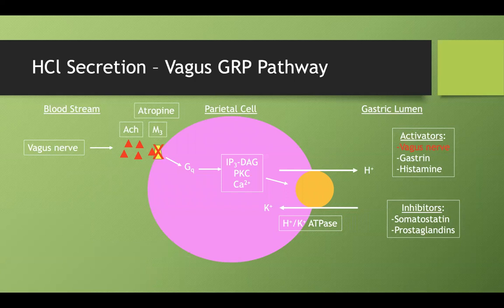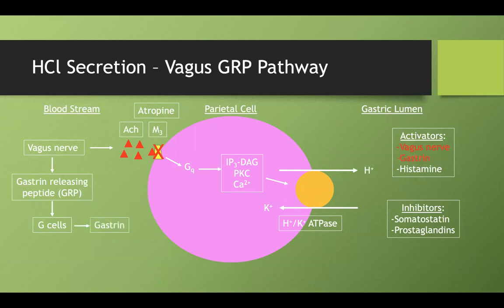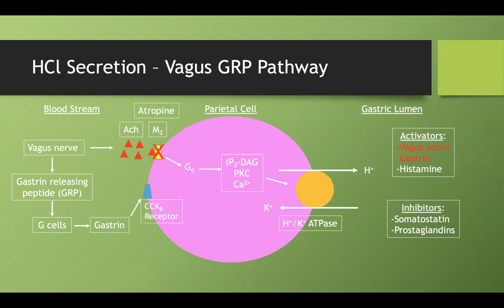The second is the GRP pathway. Instead of going down the acetylcholine M3 pathway, the vagus nerve can release GRP — gastrin-releasing peptide — which activates G cells to secrete gastrin. G cells are our gastrin-secreting cells. Gastrin is the on switch for hydrogen ion secretion. Gastrin binds to the CCK-B receptor and goes through the same GQ pathway to activate the H+/K+ ATPase.